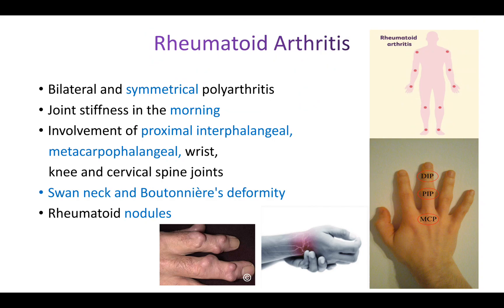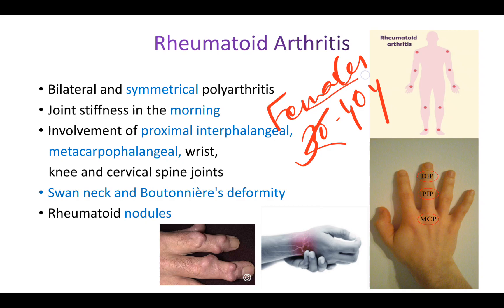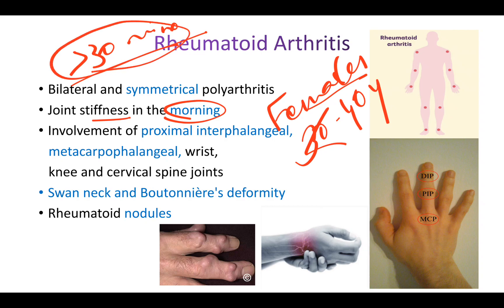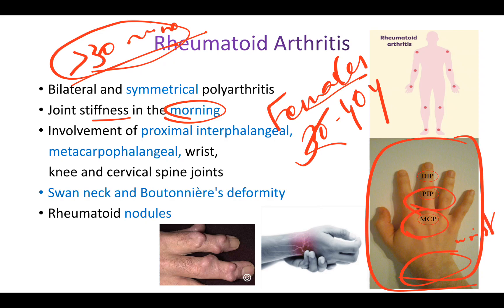Rheumatoid arthritis is mostly seen in females around 30 to 40 years old. These patients present with morning stiffness lasting more than 30 minutes — stiffness, pain, and discomfort upon waking. The hands are especially involved. The main joints affected are the wrist, MCP (metacarpophalangeal), and PIP (proximal interphalangeal) joints. The DIP (distal interphalangeal) joint is NOT involved. The knee and cervical spine can also be affected.